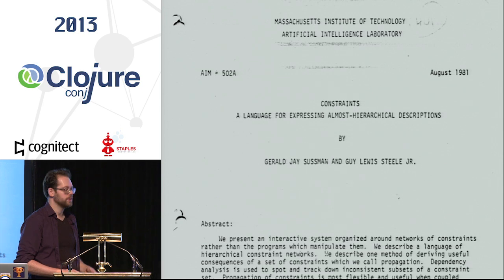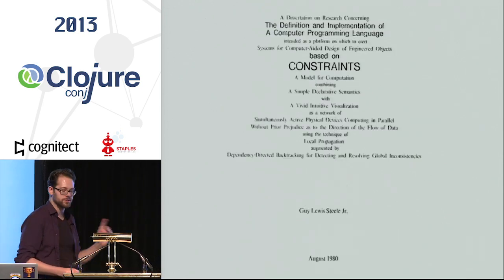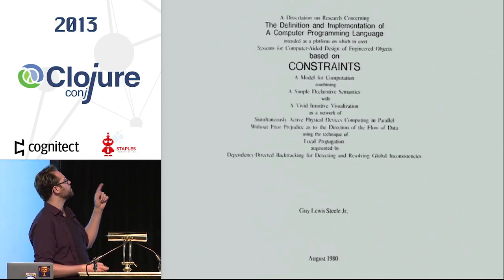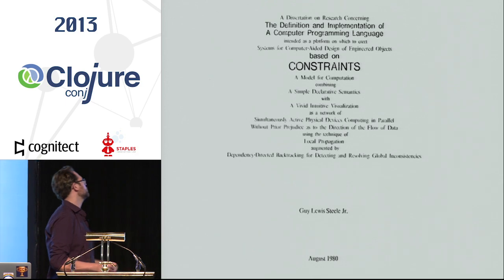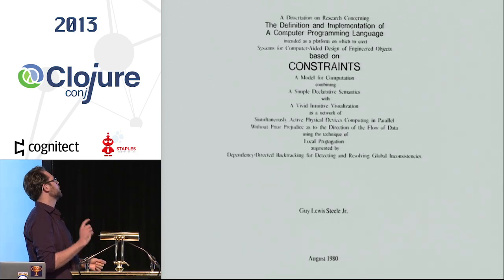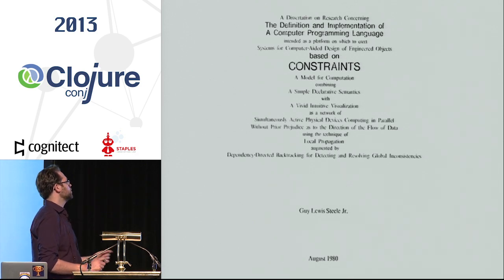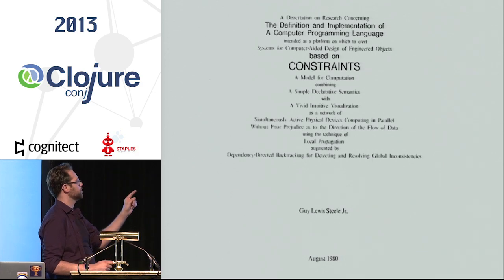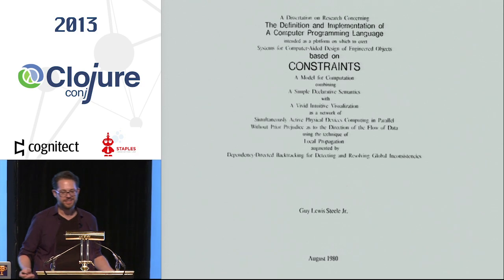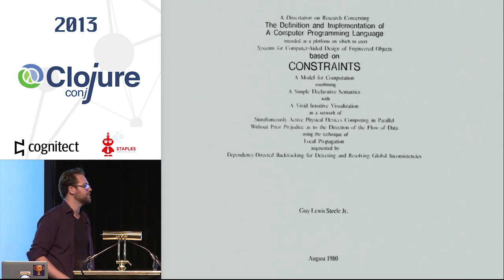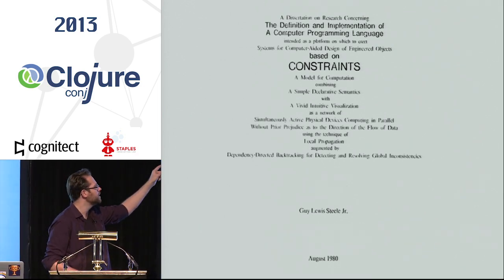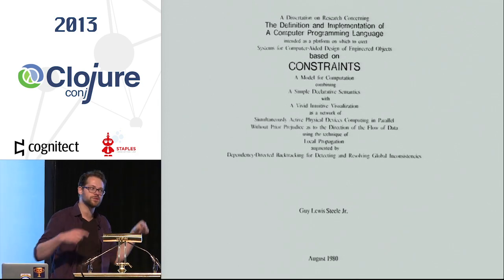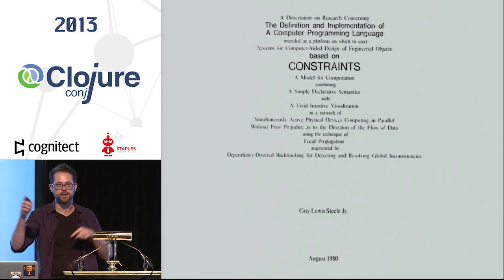It's also the main subject in Steele's PhD thesis, whose full title is: 'A Dissertation on Research Concerning the Definition and Implementation of a Computer Programming Language Intended as a Platform on which to Create Systems for Computer-Aided Design of Engineered Objects Based on Constraints, a Model for Computation Combining Simple Declarative Semantics with a Vivid Intuitive Visualization as a Network of Simultaneous Active Physical Devices, Computing in Parallel Without Prior Predictors as the Direction of Flow of Data, Using the Technique of Local Propagation and Argument by Dependency-Directed Backtracking for Detecting and Resolving Global Inconsistencies.' Key things to pick up on: it's intuitive and promises visualization — you should be able to inspect your system and figure out how values came to be.